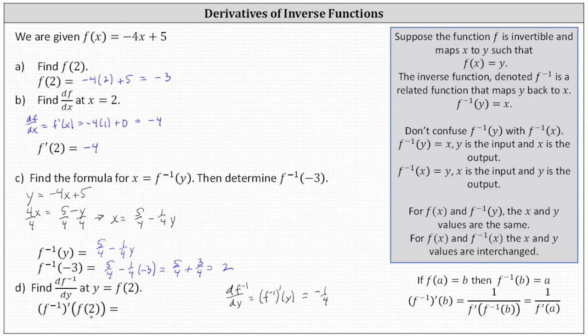f inverse prime of f of two — recall f of two is equal to negative three — so f inverse prime of negative three is equal to negative one-fourth. If we compare the derivative function value of the inverse function, it's negative one-fourth, and the derivative function value of the original function is negative four. Notice these are reciprocals of one another, which is true. The slopes of the tangent lines, or derivative function values, of an invertible function and its inverse are always reciprocals at corresponding points.